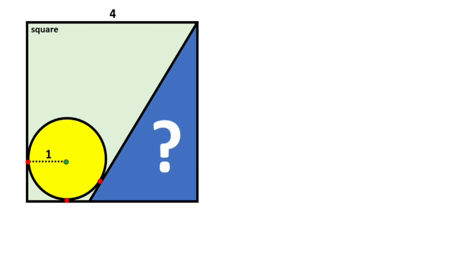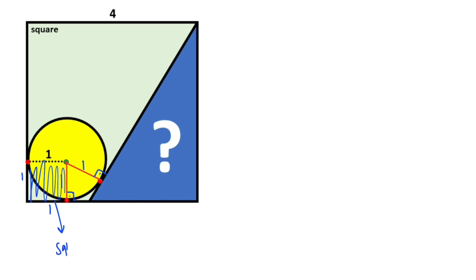First of all, if we connect the center of the circle with the tangent point like this, we know that these must be equal to 90 degrees, because of the tangent. These are also one unit because of the radius, and here is one unit, and this length is also one unit. Notice that we get a small square.